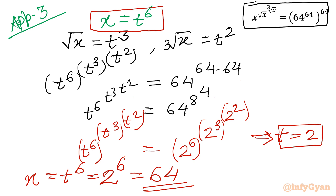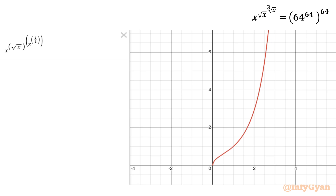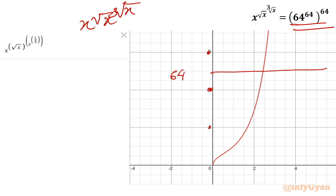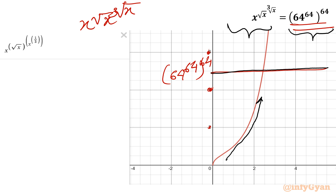Now let's check the uniqueness of the solution. I have drawn the graph of our function x power root x power cube root x. The right-hand side is 64 power 64 whole power 64, which is a very large constant. The left-hand side is an exponential function, and the right-hand side is a constant function — a straight line parallel to the x-axis. One function is monotonically increasing, and the other is constant, so there would be at most one intersection point. And this point is x equal to 64.